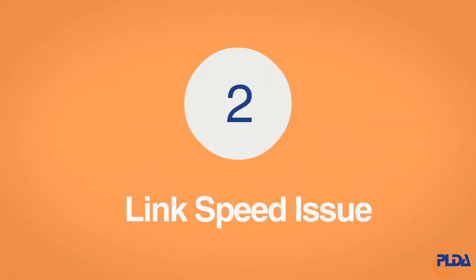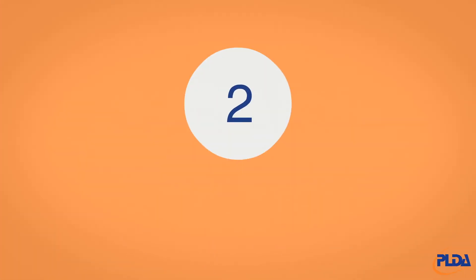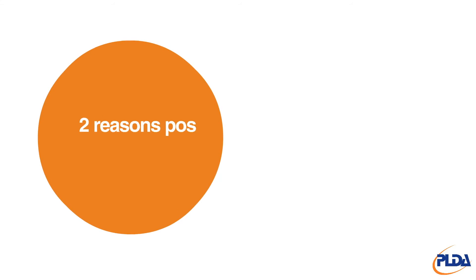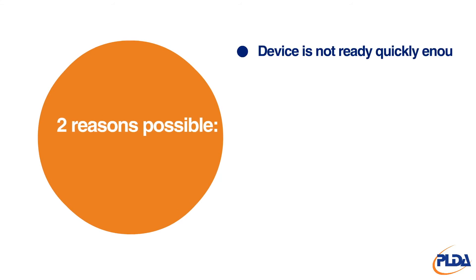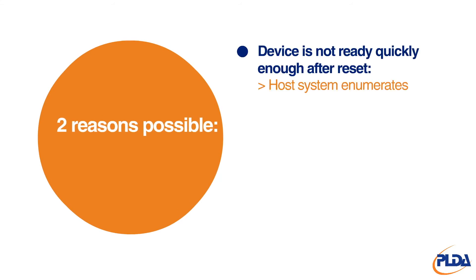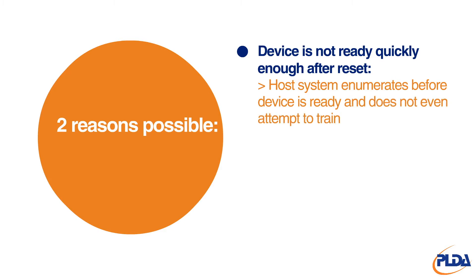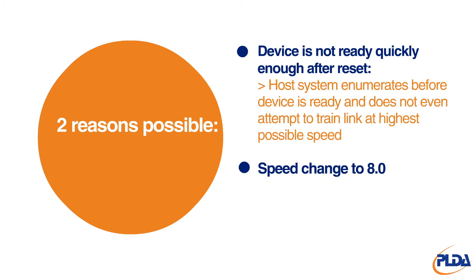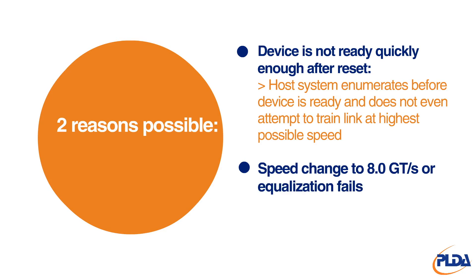Link speed issues. These may be caused by the device not being ready quickly enough after a reset, a speed change to 8 GTs, or an equalization fail.